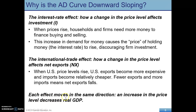Notice that each of these moves in the same direction: an increase in the price level decreases real GDP, or conversely, a decrease in the price level raises real GDP. That's how we get the downward-sloping aggregate demand curve.